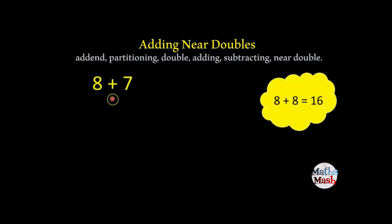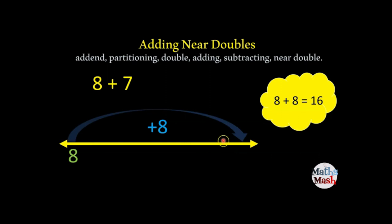Okay, 8 plus 7. Again, we start with what we know. We know that 8 plus 8 is 16. So we draw our number line. We start with our 8 here. There's our 8. We make our jump of 8 from here and that's going to give us 16. But now we're not adding 8 plus 8. We're adding 8 plus 7. So that means we're going to take away 1, count back 1, gives us 15. So 8 plus 7 is 15.